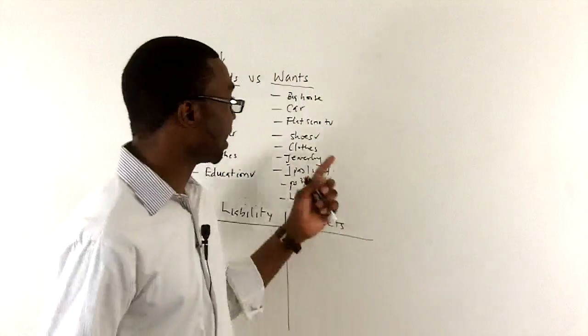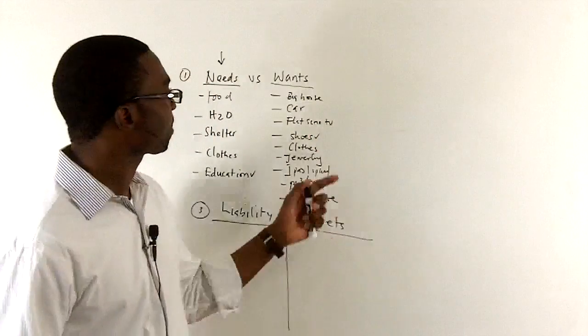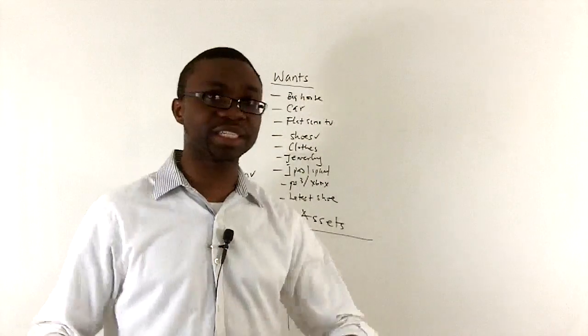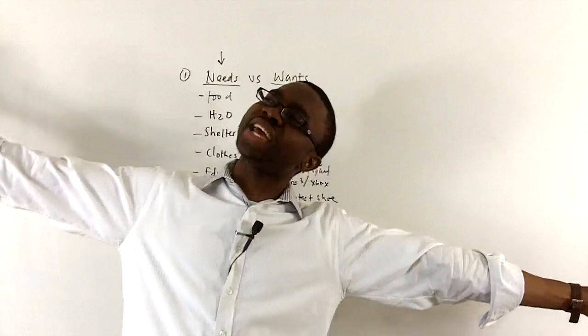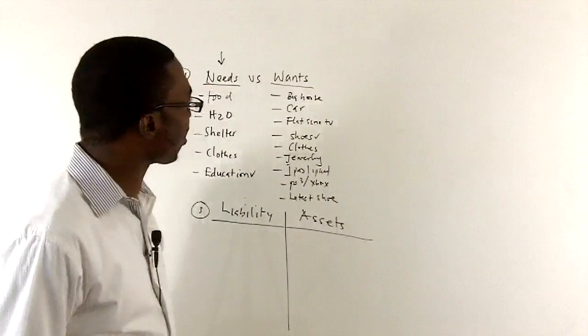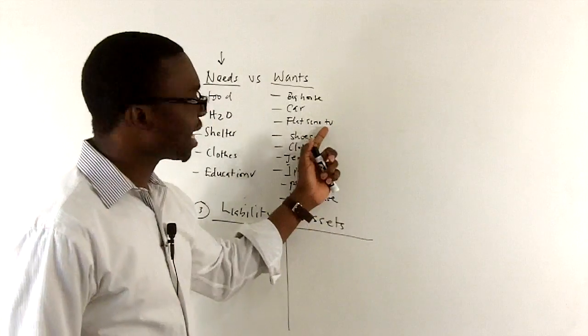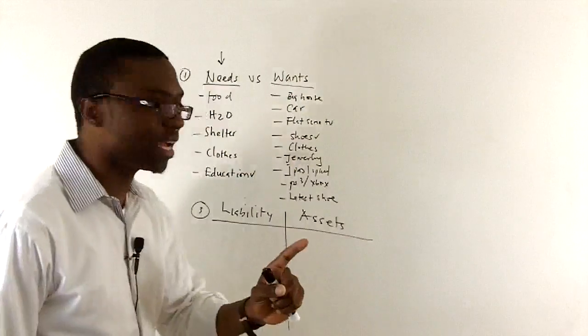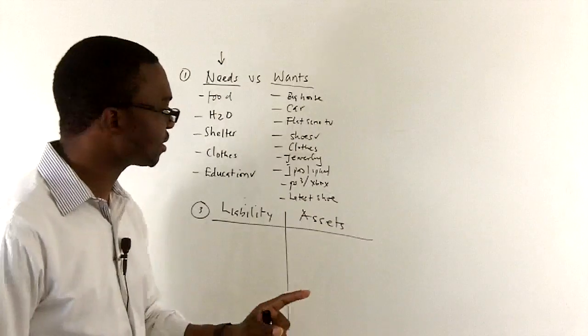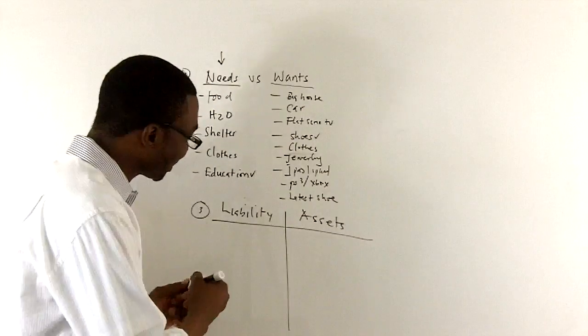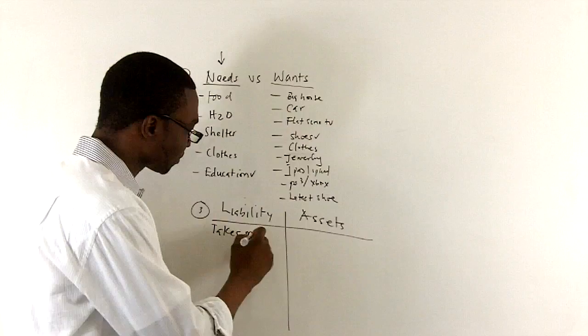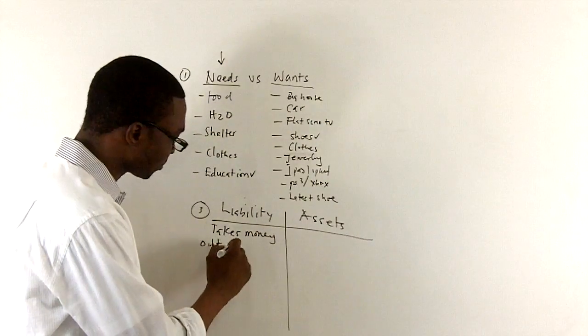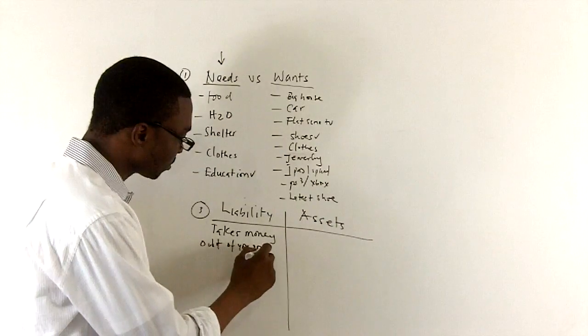Like, buying a car that you cannot afford, buying a bigger house than you can afford, buying a big flat screen TV because it's Black Friday! But wait a minute, I put it on my credit card and I'm broke, and I don't have enough money in my bank account. But hey, I'm saving money because it's Black Friday. Bad idea. Resist the temptation. So anything that takes money out of your pocket, that's a liability.